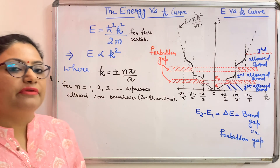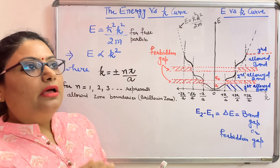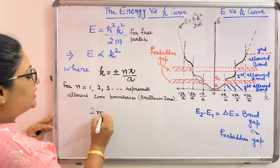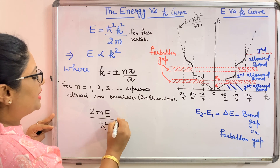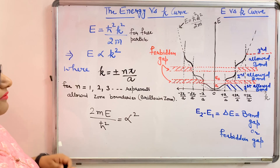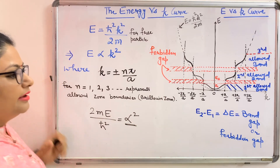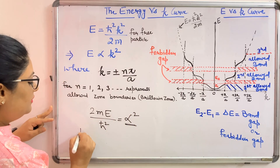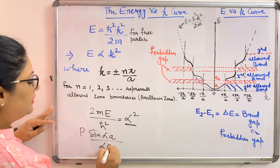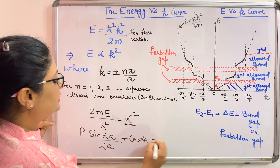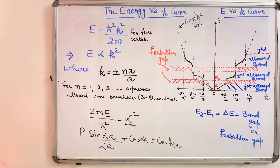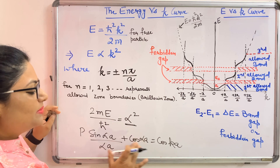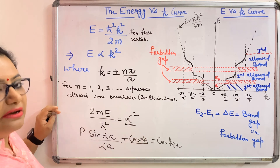When the particle is in a periodic potential, the K values are represented by the alpha values. The relation is 2mE/ℏ² = α². From the KP model, we have seen that all values of alpha are not allowed — some values represent the forbidden region. The KP equation is: P·sin(αa)/αa + cos(αa) = cos(ka). This left-hand side depends on values of alpha, and it can take values beyond ±1, whereas cos(αa) is bounded between ±1.